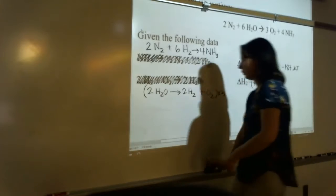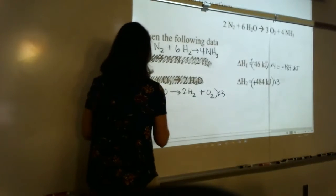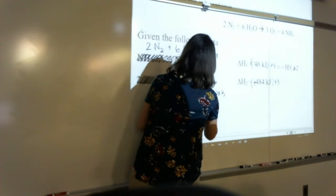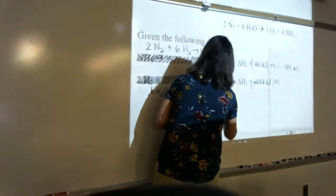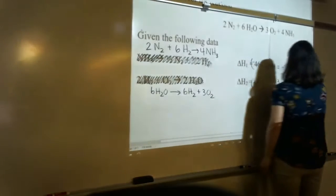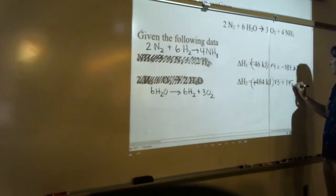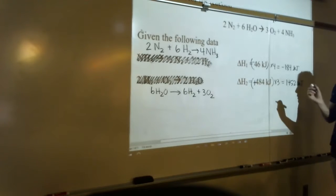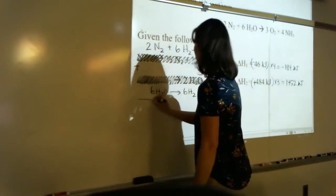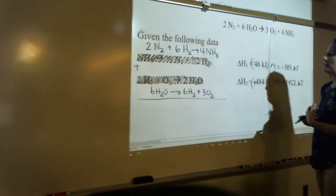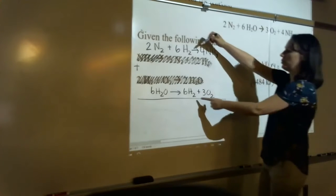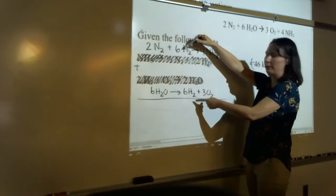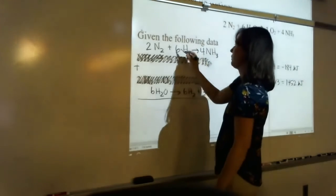Multiplying by 3: 3 × 2 = 6 H₂O, 3 × 2 = 6 H₂, and 3 × 1 = 3 O₂. And 484 × 3 = 1,452 kJ for delta H. Now adding: the 6 H₂ appears on both reactant and product sides with matching coefficients, so they cancel out — just like spectator ions.